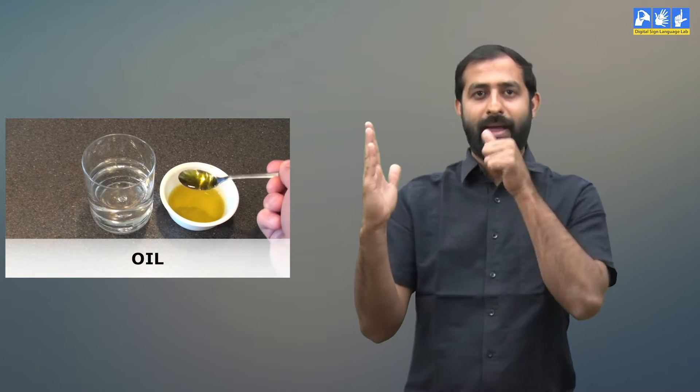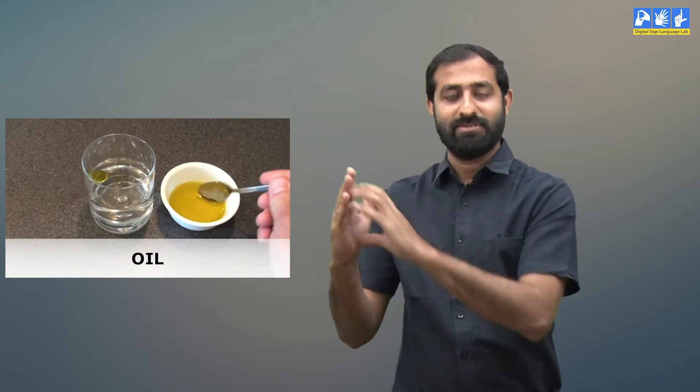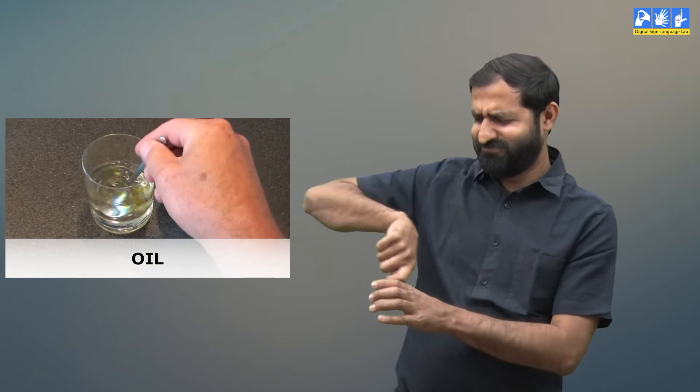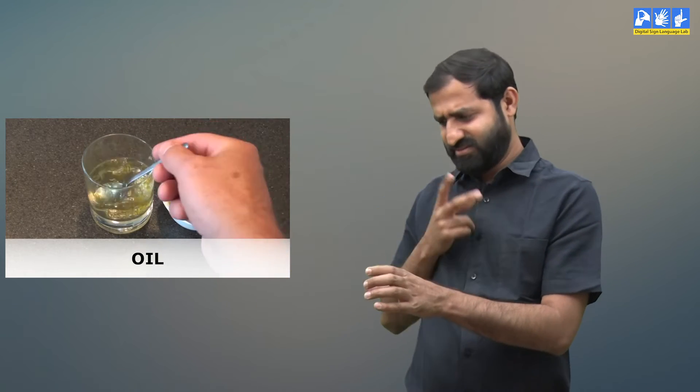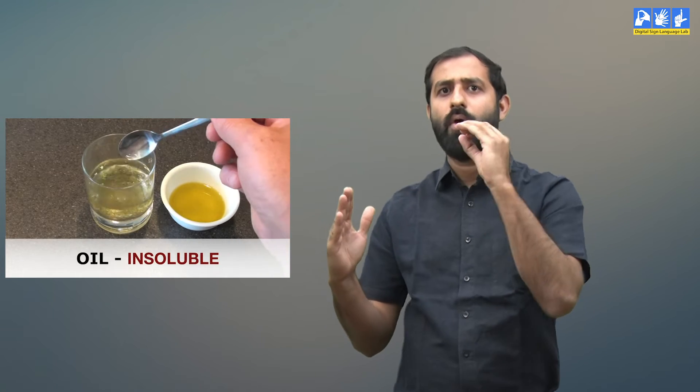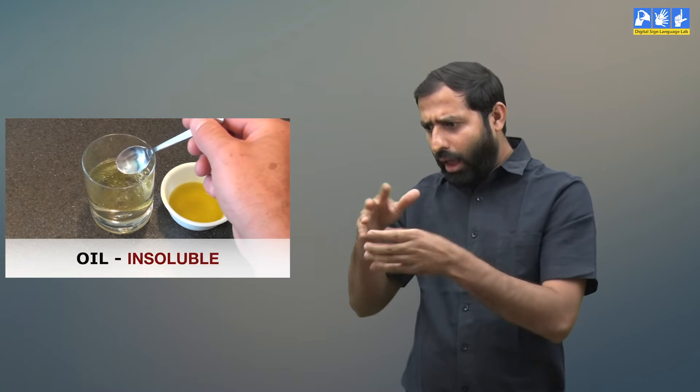Now take another glass and put some oil and water in that glass. Then stir the mixture of oil and water. After some time we will see that the oil won't dissolve in water. It will just float on top of the water. So this is the difference between soluble and insoluble materials.